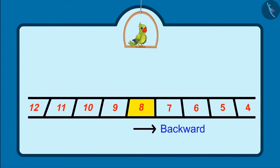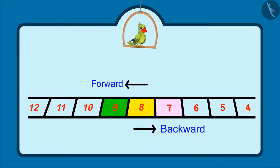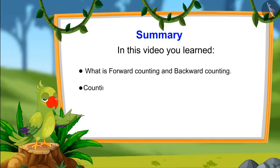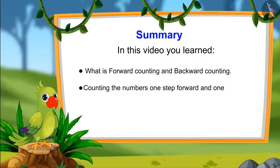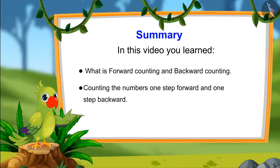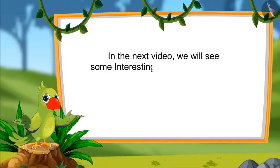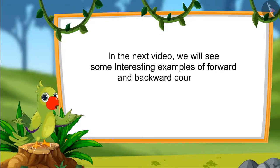A number backward from 8 is 7, and a number forward from 8 is 9! So kids, that is all for today. In this video you have learnt what is moving forward or forward counting, and going backwards or backward counting, and how to count 1 step forward and 1 step backwards. In the next video we will see some interesting examples of forward and backward counting! Till then, bye-bye kids!